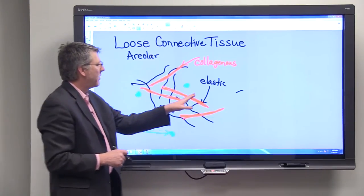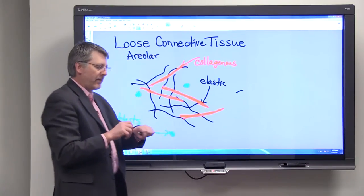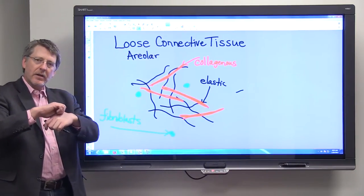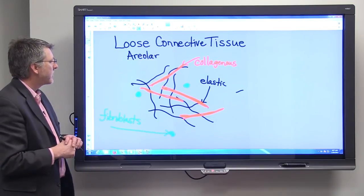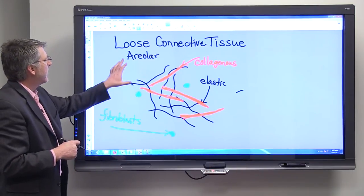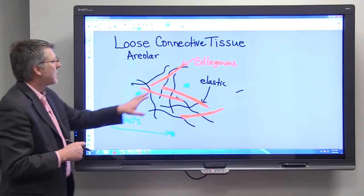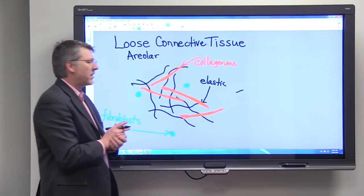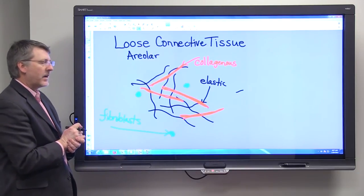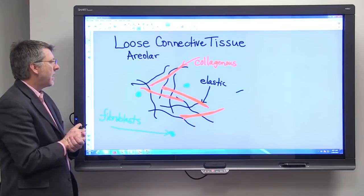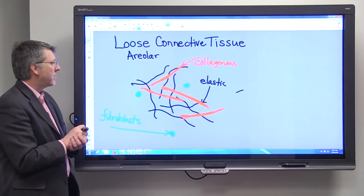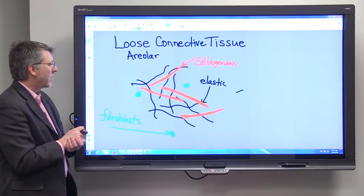But at the same time, the elastic fibers give you that elastic nature and allow that tissue to stretch to some extent. So loose connective tissue contains both collagenous fibers that make it very tough, but at the same time it has an elastic quality that allows it to stretch and recoil.